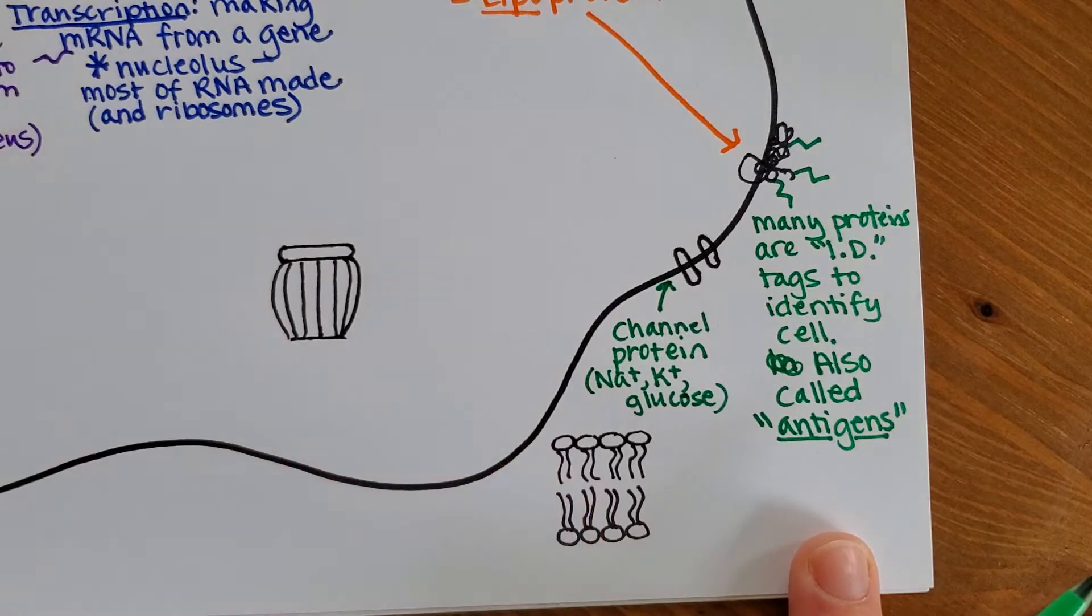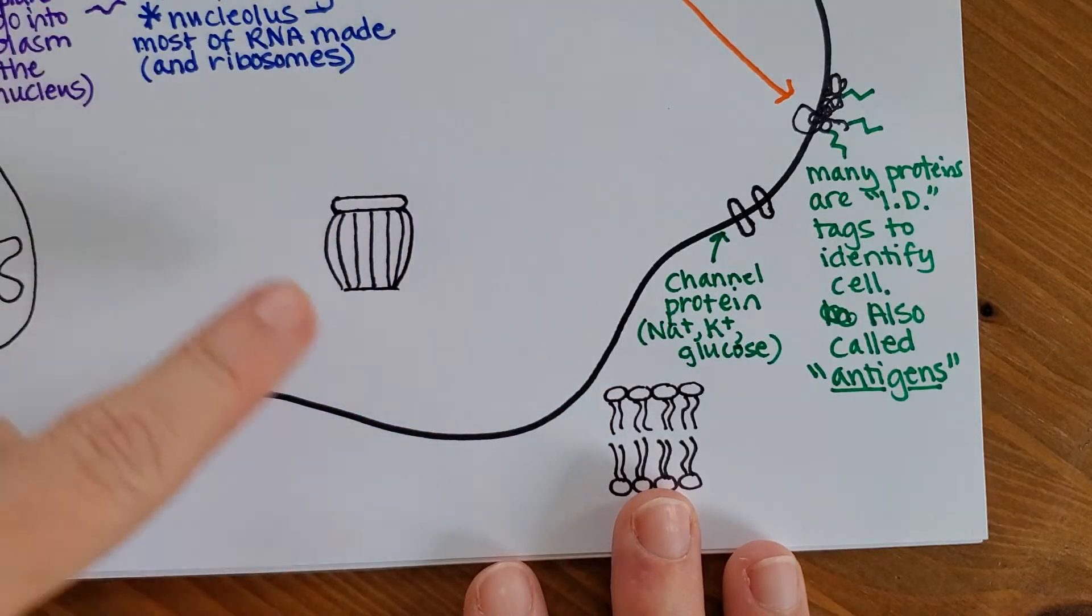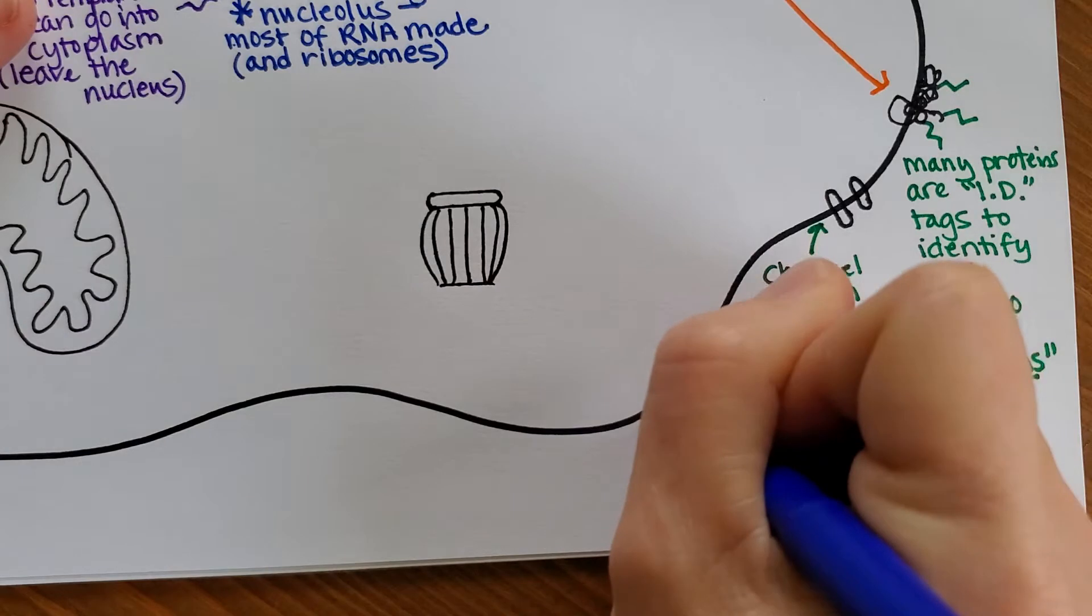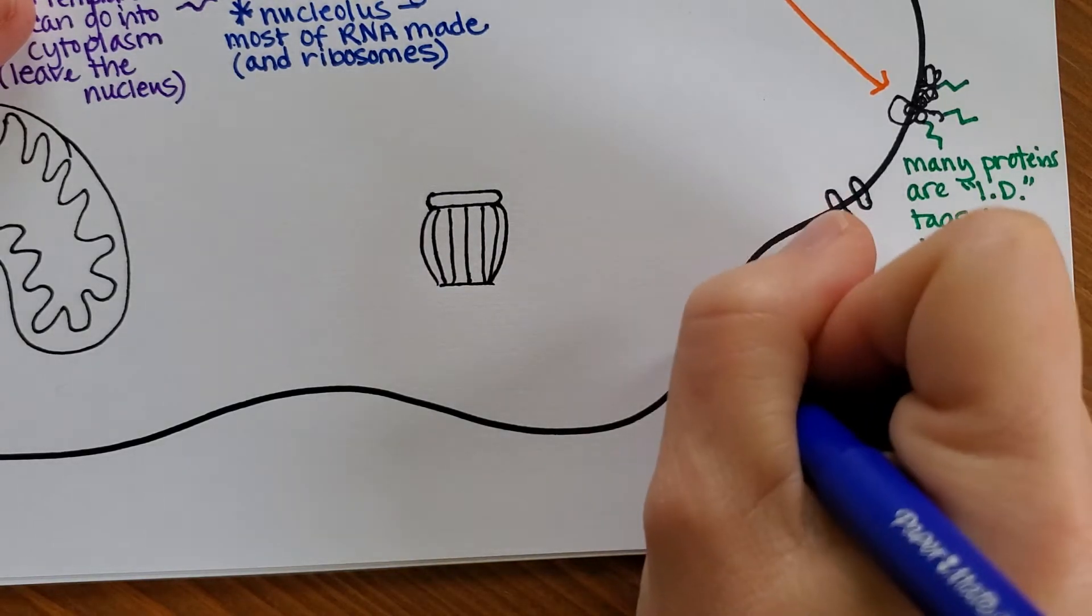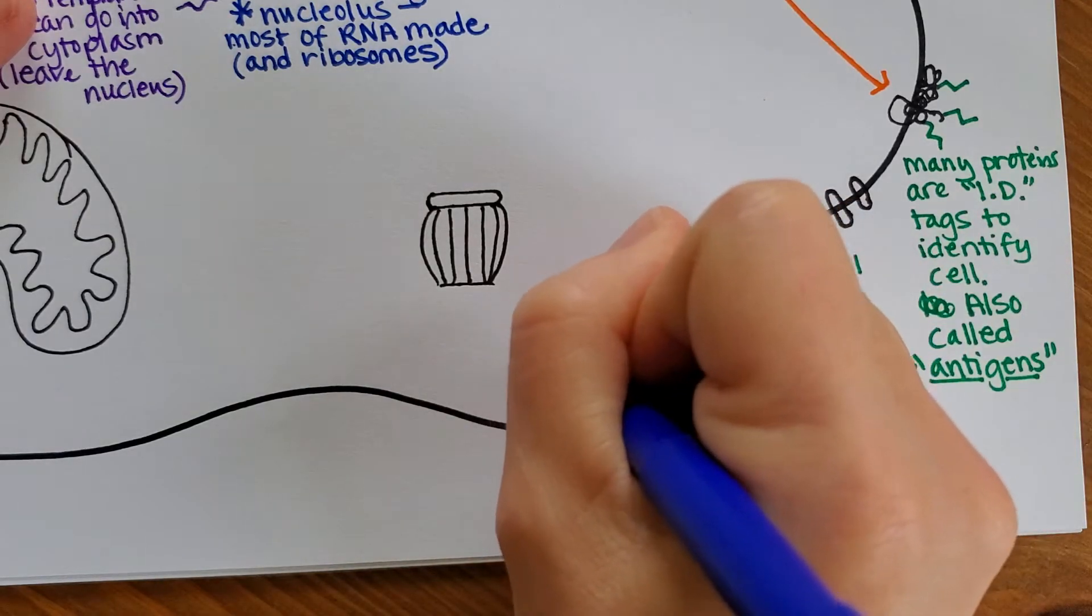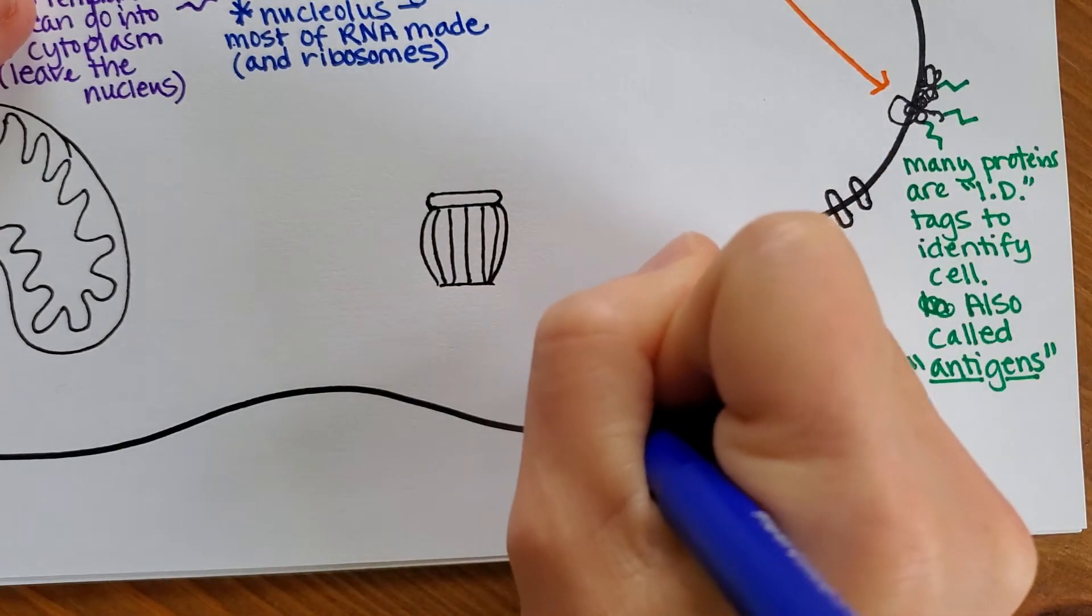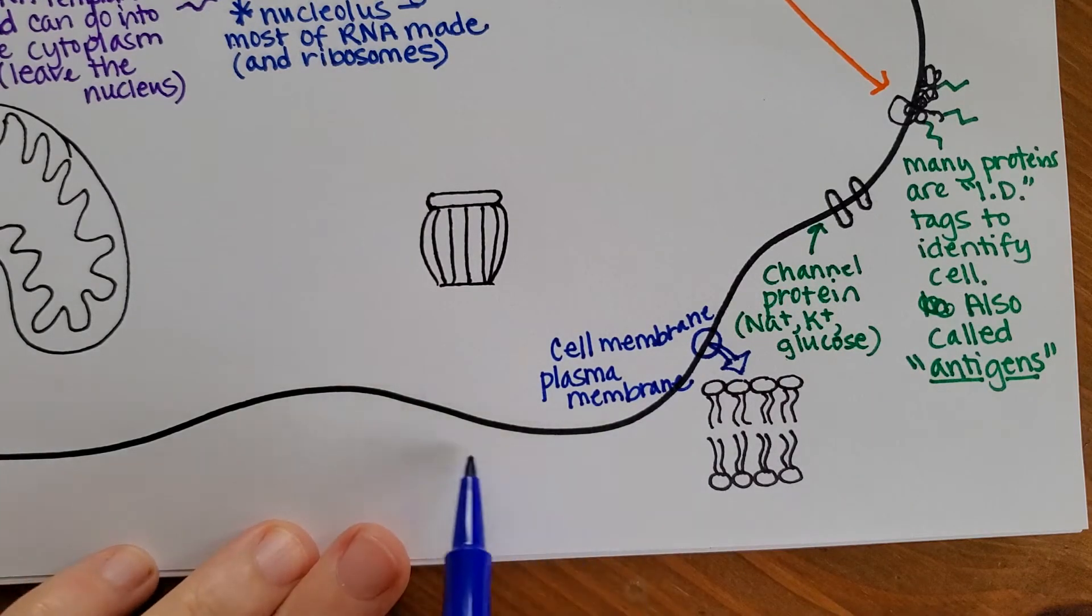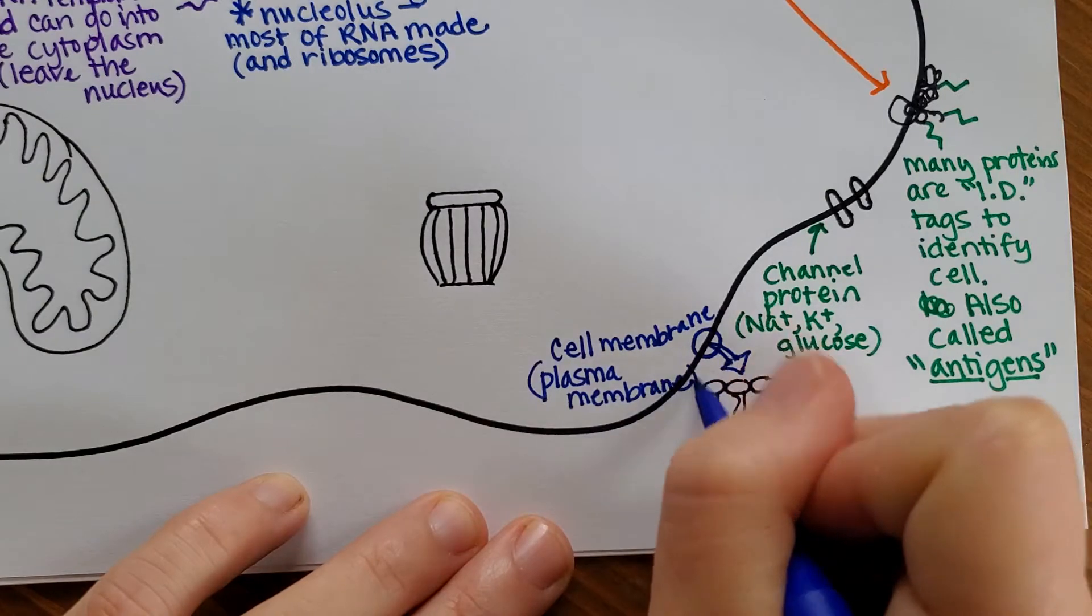So speaking of the cell membrane, let's take a look down here and label that. Let's go ahead and go back to blue again. This is a closeup of the cell membrane. So sometimes it's called the cell membrane. And plant cells, they have another layer outside of this called a cell wall, and so do bacterial cells. But we just have this one layer.